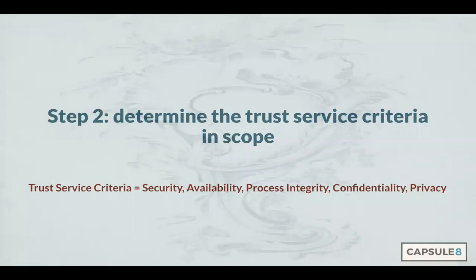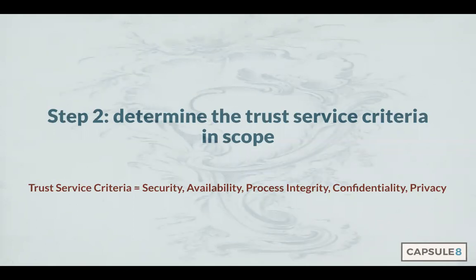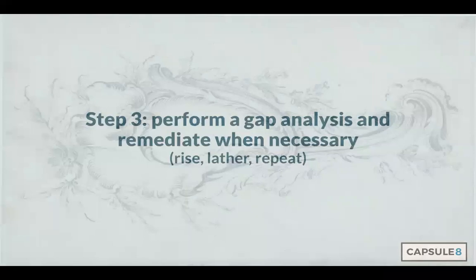For Step 2, once you've determined the shared responsibilities, you need to determine the trust service criteria you want in scope. We know security is going to be there. Best case scenario, this is not a check-the-box exercise but an opportunity to set compliance standards for the organization. Remember, you have to include security, but each trust service criteria has its own set of controls. Step 3: perform a gap analysis, implement remediation when necessary, and repeat. Key factors determining how many times you cycle through these steps include the scope of your audit.